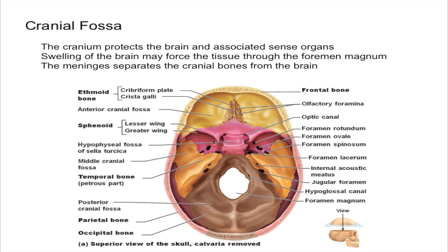On the outermost part of the brain, there are essentially three layers of membranes called the meninges, which separates the brain from the skull or the cranial bones. The cranium is divided into two parts: the top part is called the calvera, and the bottom part is called the cranial base.